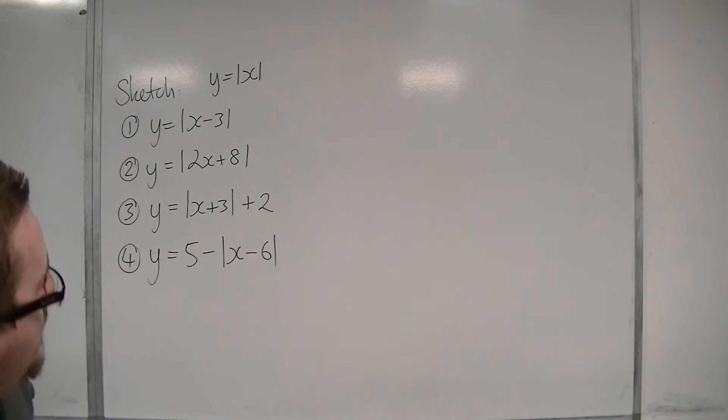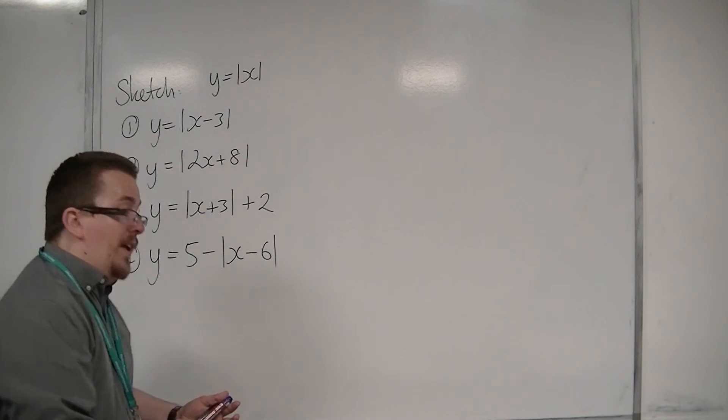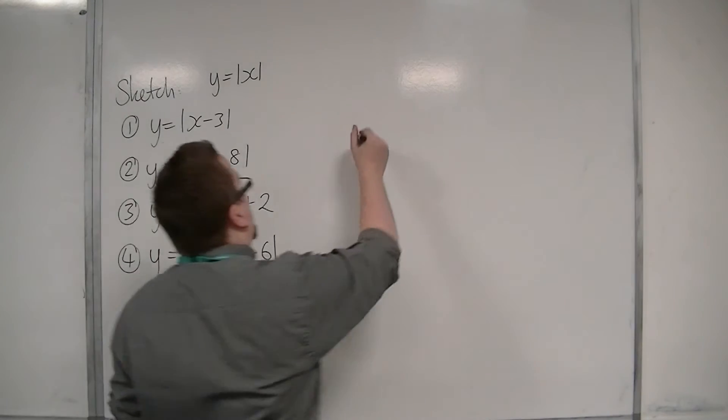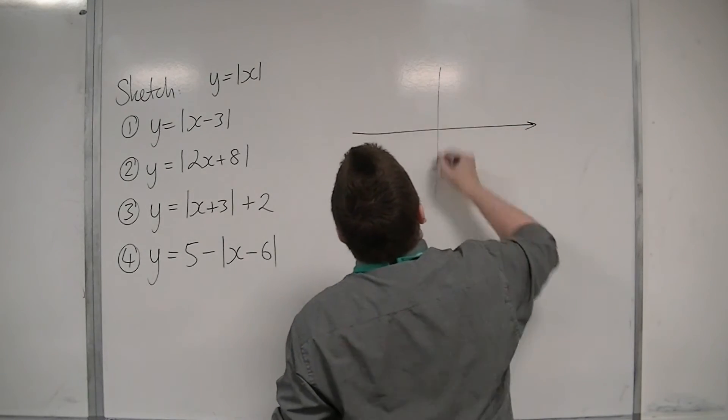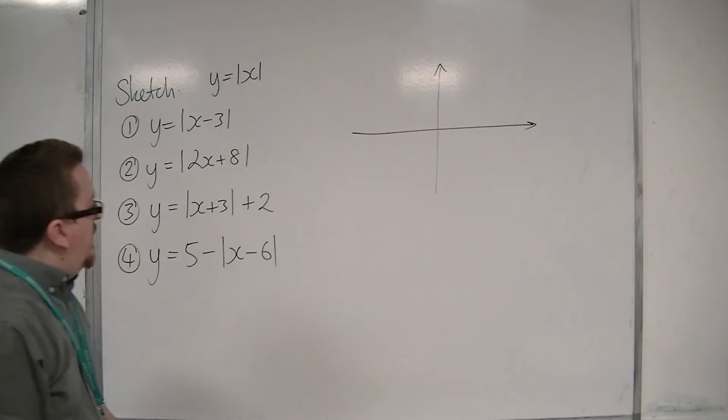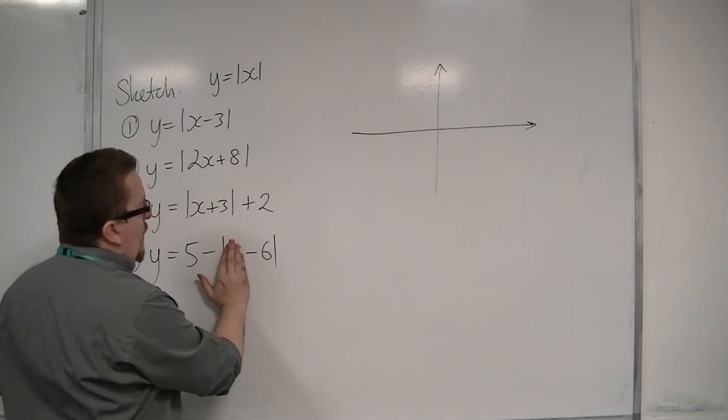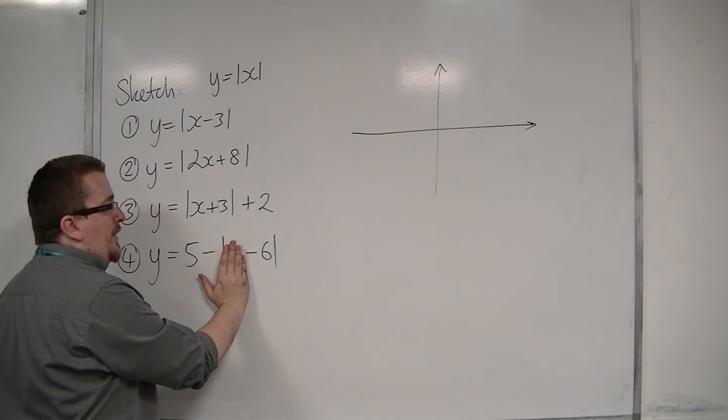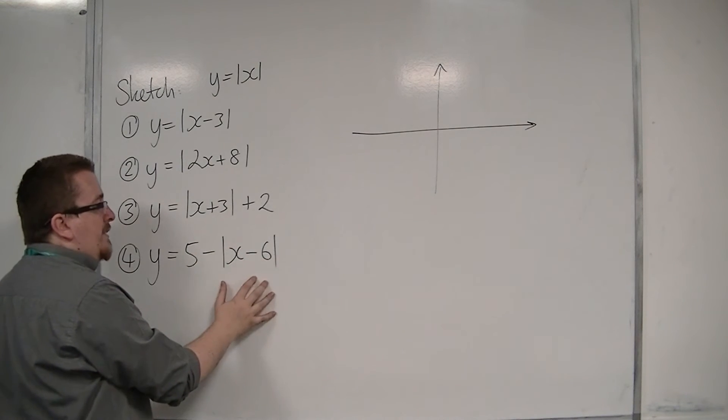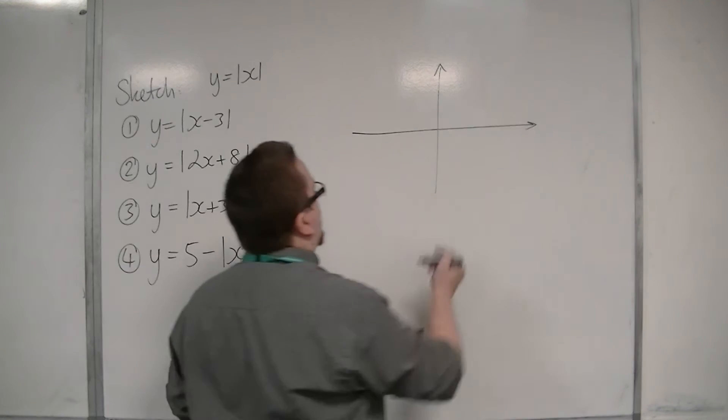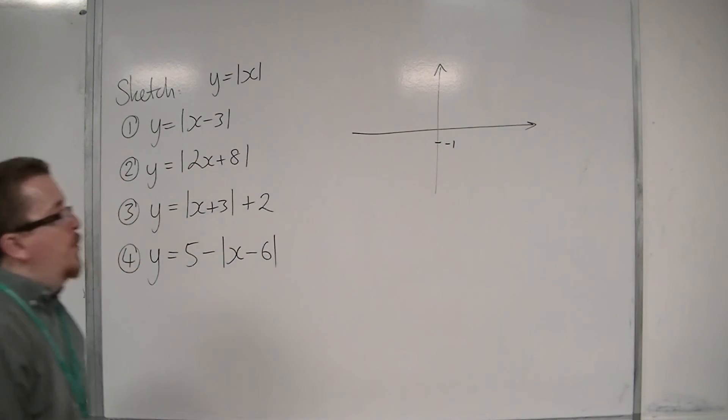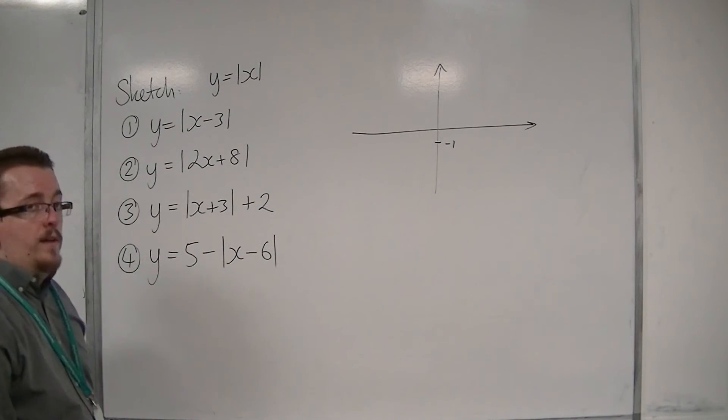Y equals five minus the modulus of x minus six. So let's use our tried and trusted techniques. When x is zero, we get five take away the modulus of minus six. So that's five take away six, which is minus one. So we know that the graph goes through minus one on the y-axis.